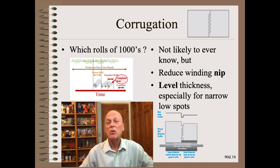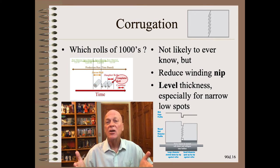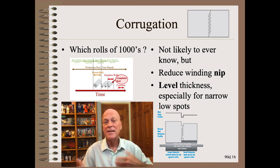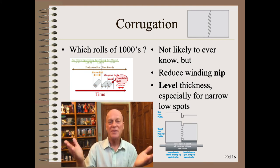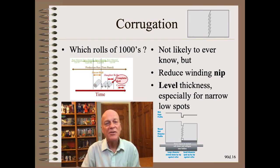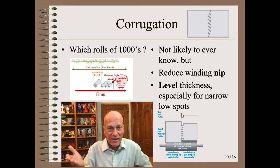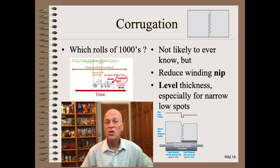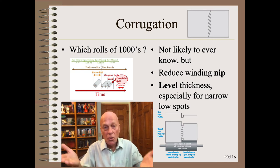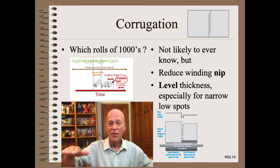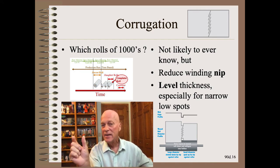Let us apply our new troubleshooting techniques to a very common wound roll defect: the corrugation. Trying to predict beforehand which roll among thousands will fail to satisfy the customer using process and test-top data would be daunting at best. The good news is that we have a hundred publications mentioning this common defect, and the consensus is simple. Step one is to reduce the winding nip as much as the winding machine and roll will allow. After that, to go further, you will have to level the web's thickness profile better, especially by filling in the narrow low spots.